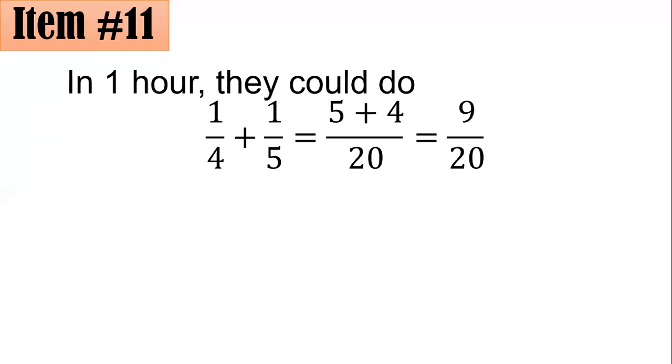So with such, one-fourth plus one-fifth, they are dissimilar fractions. So their LCD is 20. 20 divided by 4, that's 5, times 1, we have here 5. Plus 20 divided by 5, that's 4, times 1, that's 4. So 5 plus 4 is 9. Therefore, working together, they could do 9/20th of the work. That is in one hour.